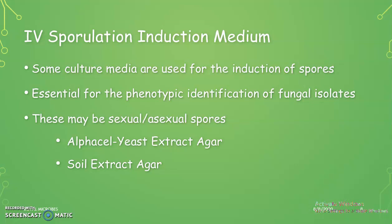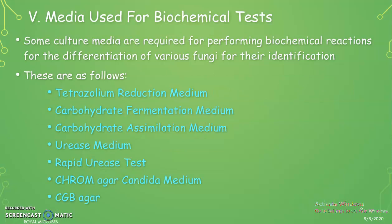The fourth category is sporulation induction media. These media are mainly used for inducing spore formation, which is essential for the phenotypic identification of fungal isolates. There are two types of spores: sexual spores and asexual spores. The two important media used for sporulation induction are Alphacel Yeast Extract agar and Soil Extract agar.